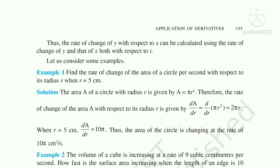Differentiating: dA/dr = d/dr of πr². Since π is a constant, it comes out, and d/dr of r² gives 2r, so dA/dr = 2πr. The condition given is r = 5 cm. Substituting r = 5, the rate of change of the area is dA/dr = 10π. That is our required answer.